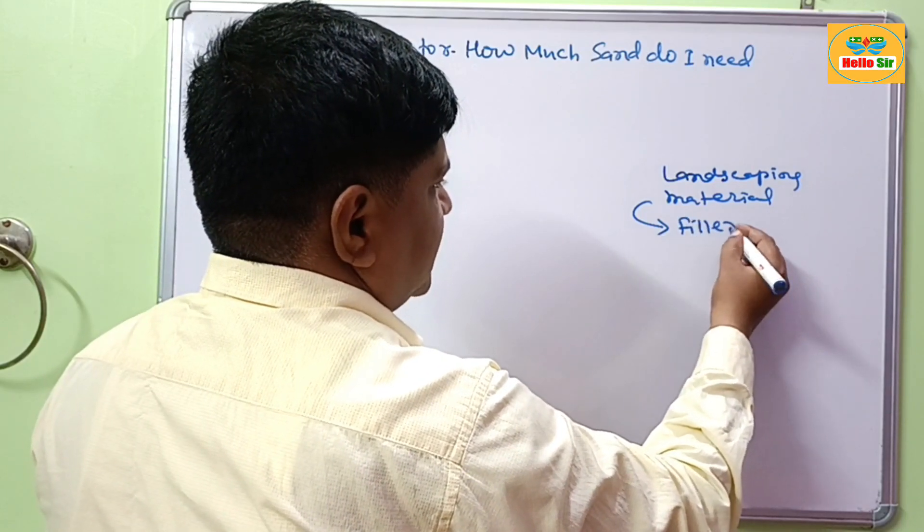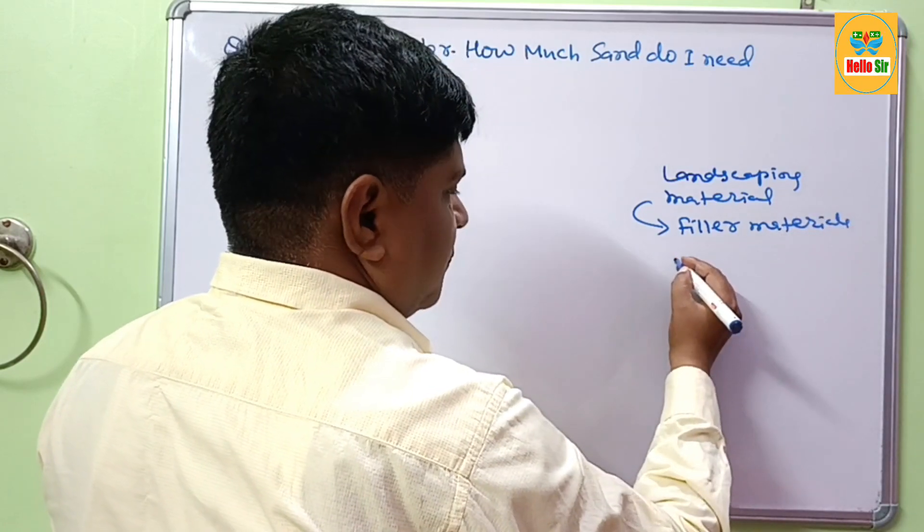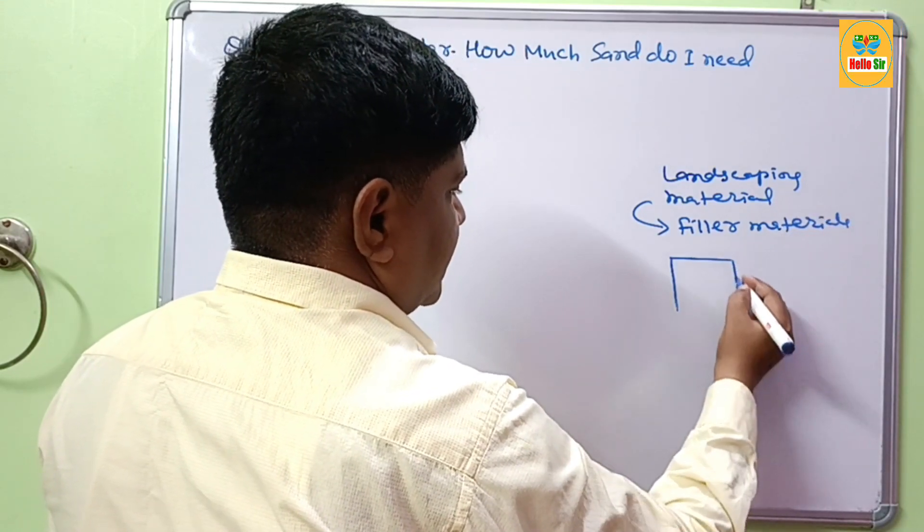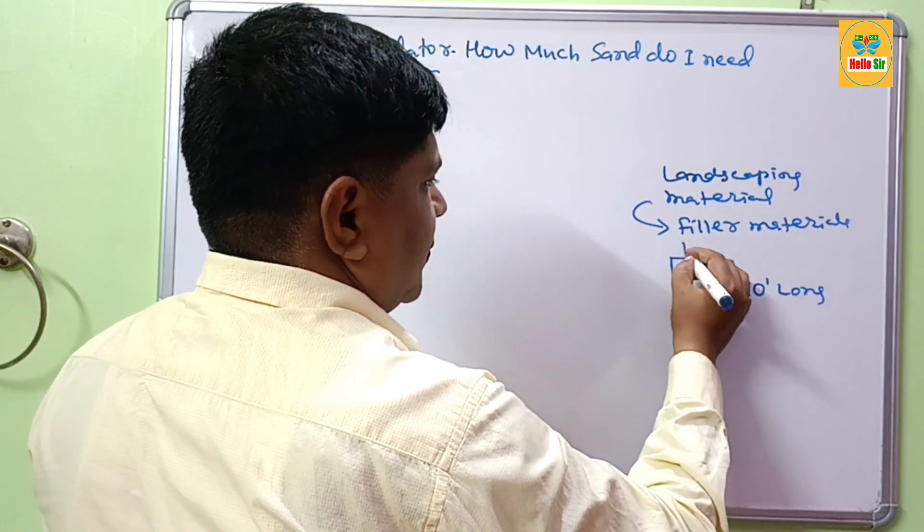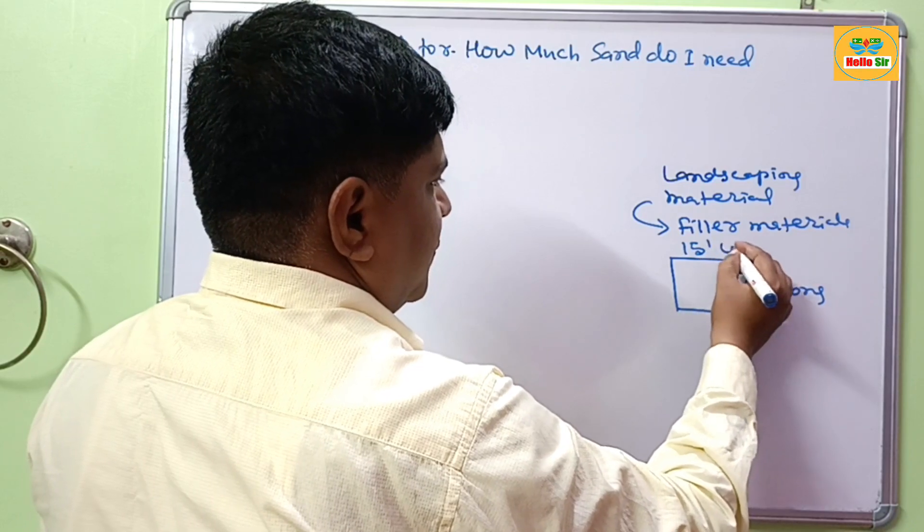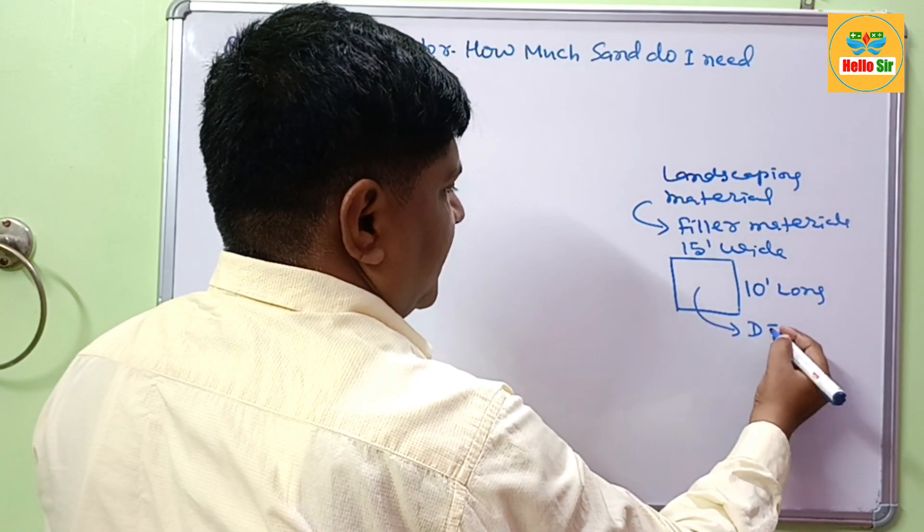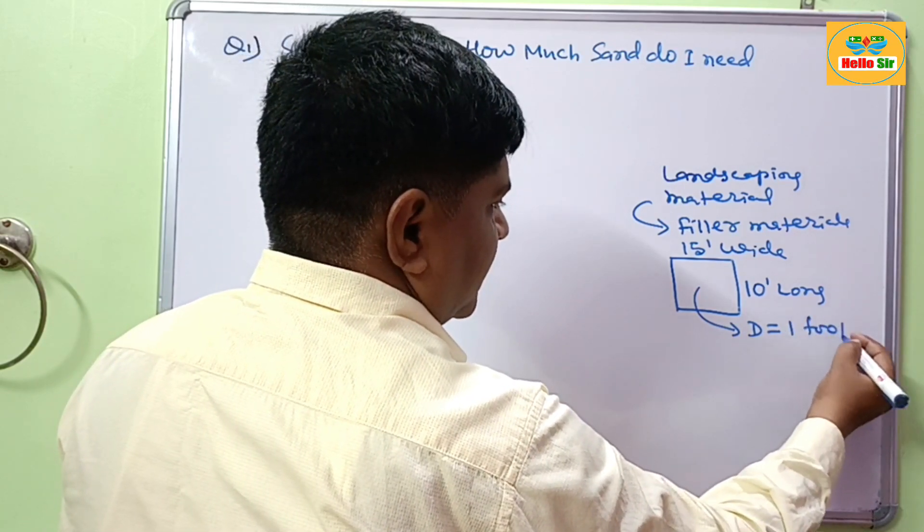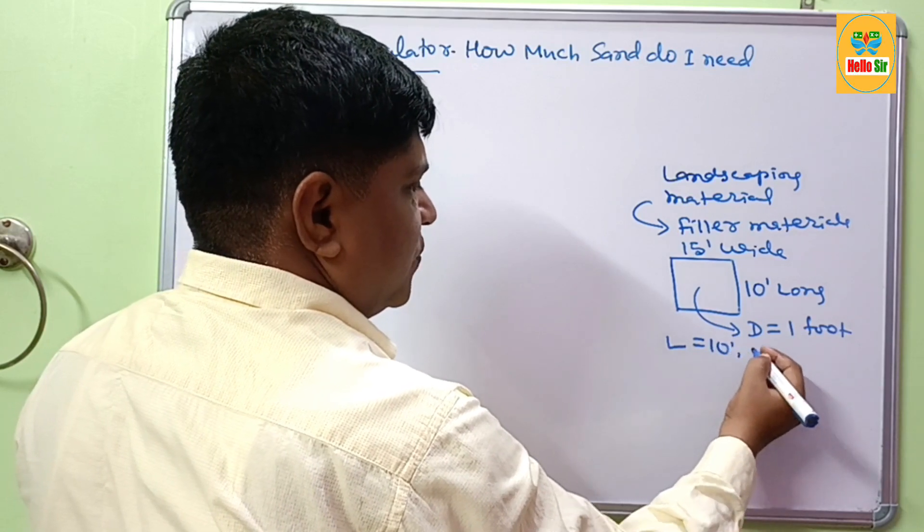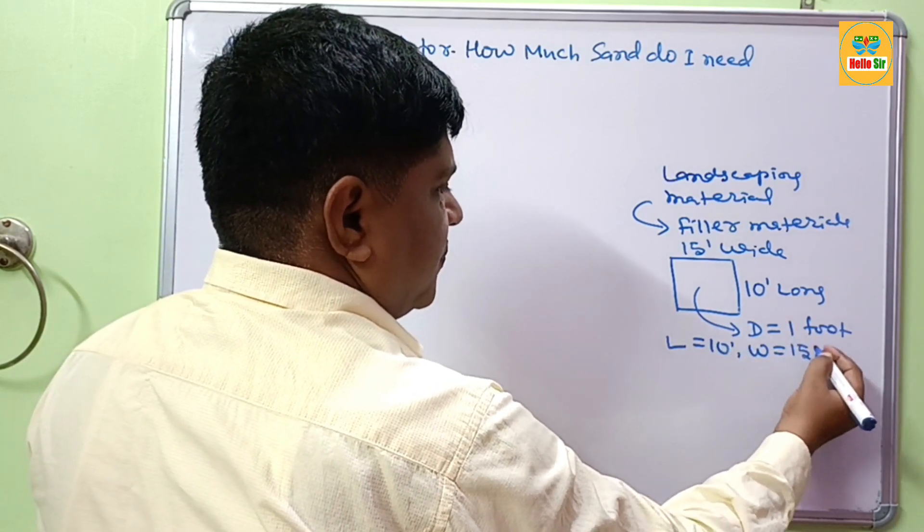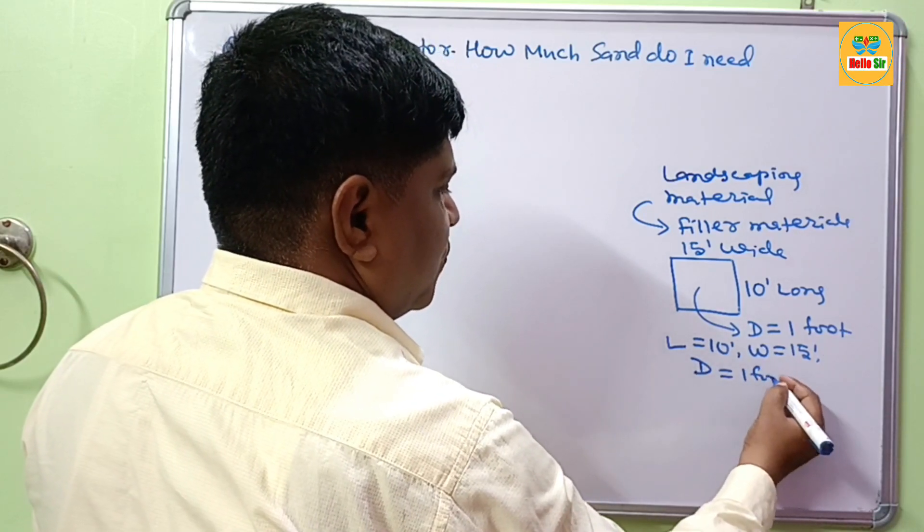It is used as filler material. If your project is 10 foot long, 15 foot wide, and the depth of your project is 1 foot. Here the length is 10 foot, width is 15 foot, and depth is 1 foot.